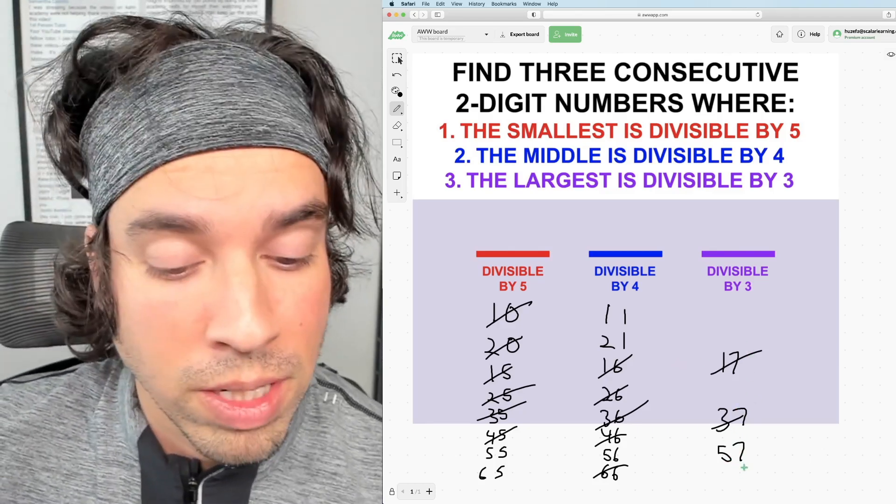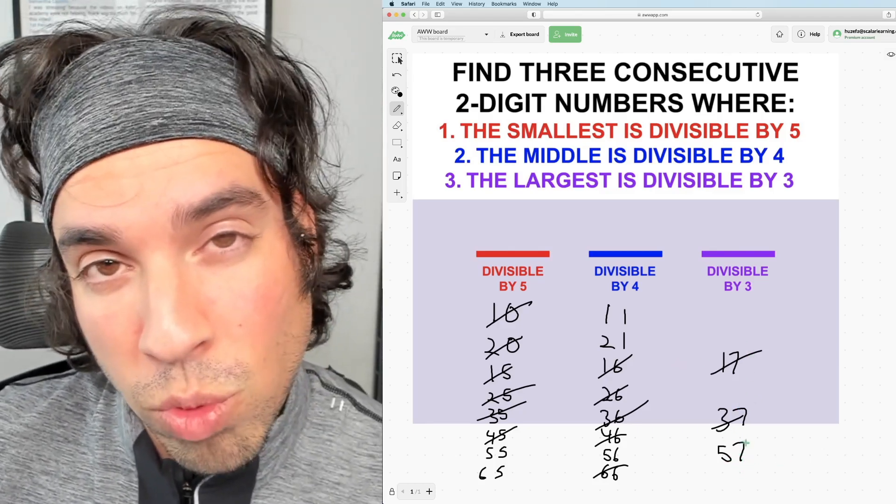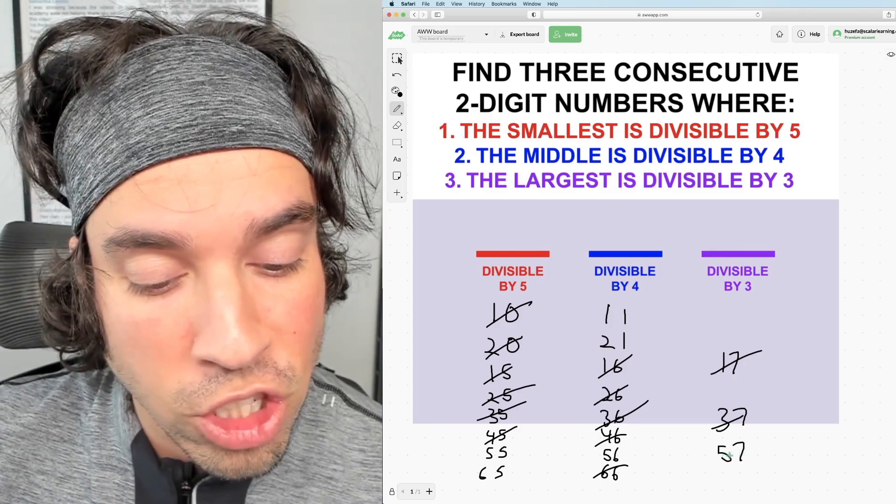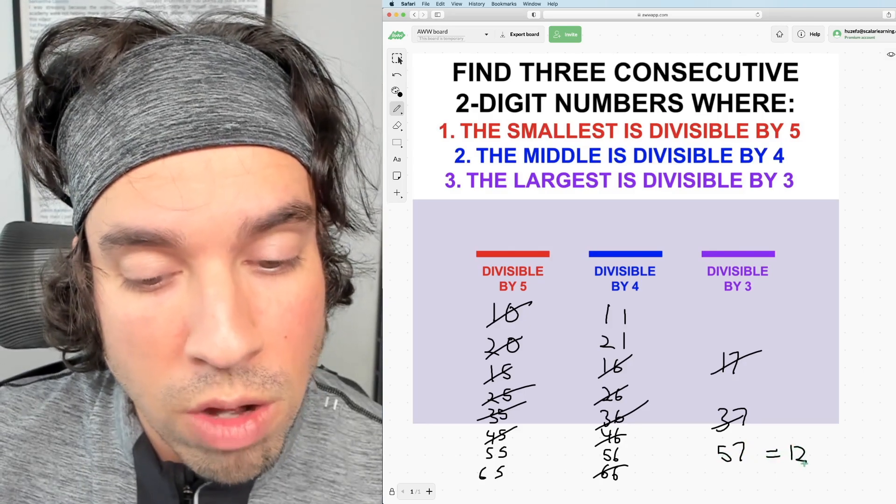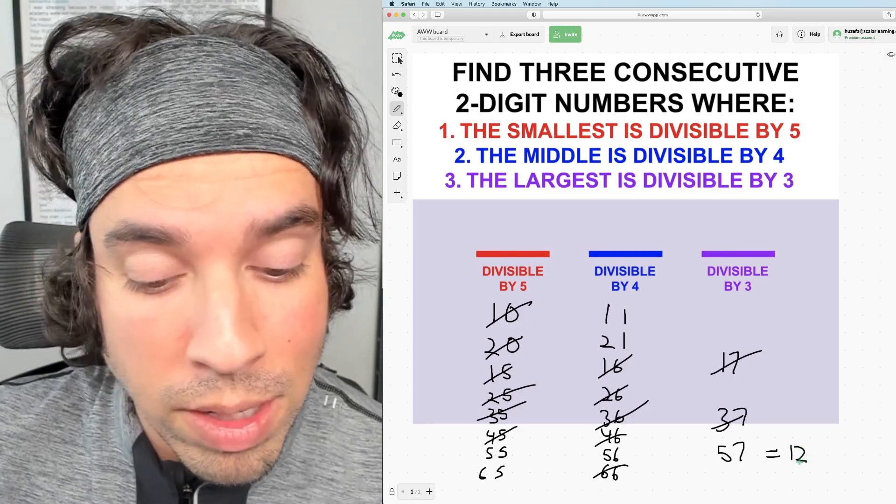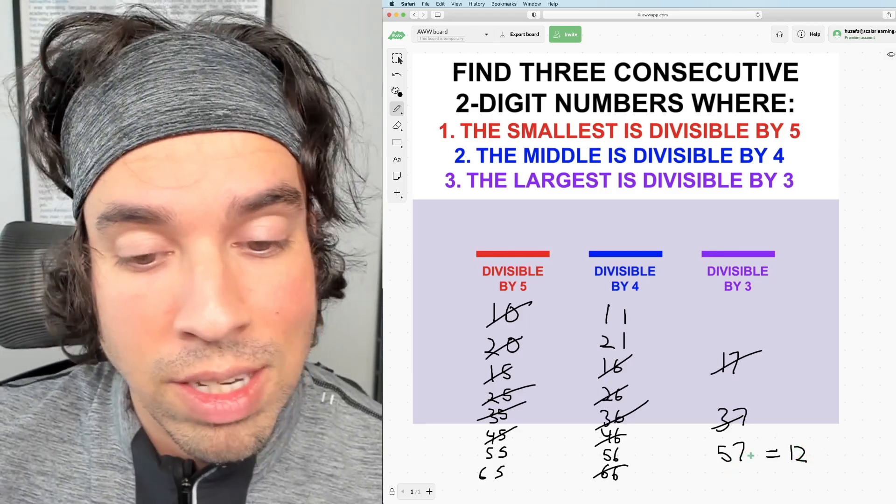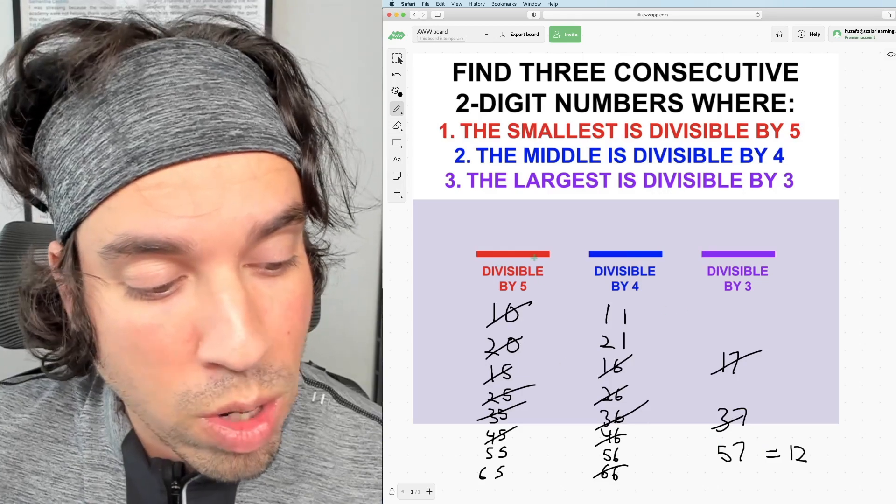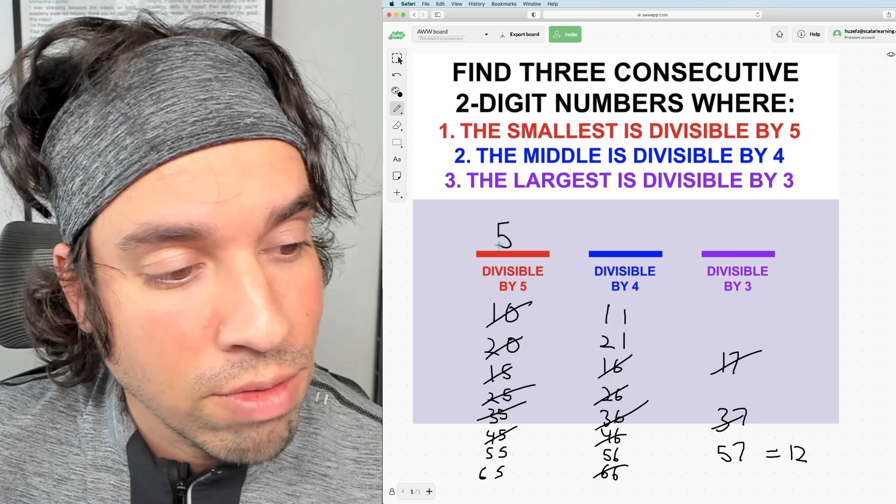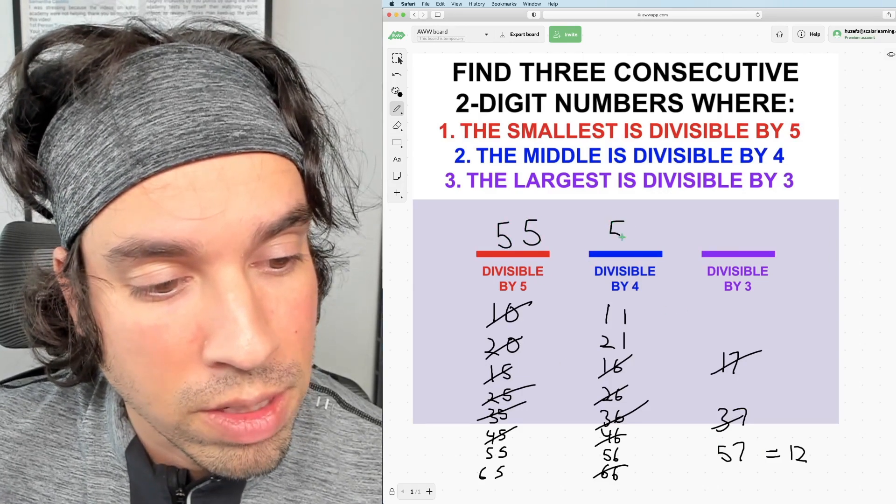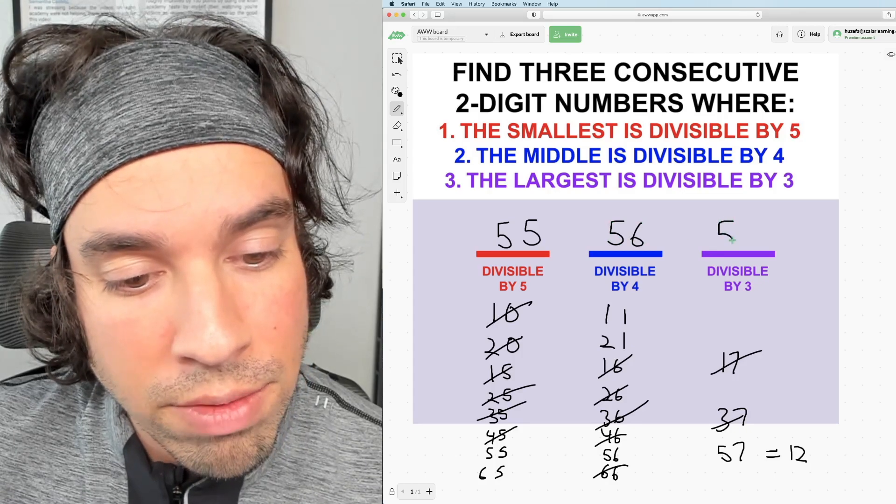And if you want a shortcut to figure that out, remember my divisibility rules for three. If I add the digits, meaning five plus seven equals 12. If I know that 12 is divisible by three, I know that 57 must be divisible by three as well. So my solution is 55, 56 and 57.